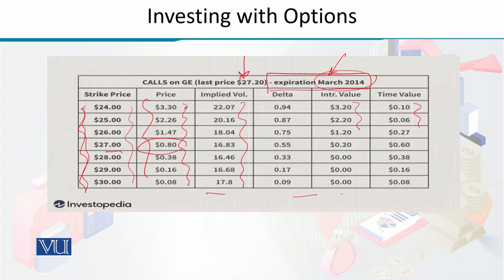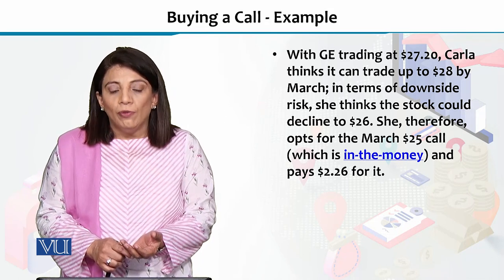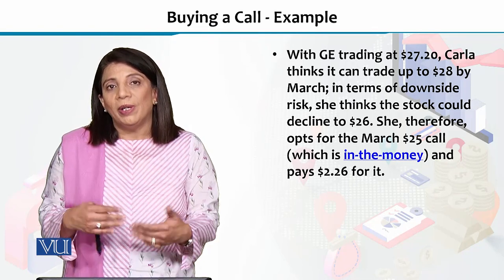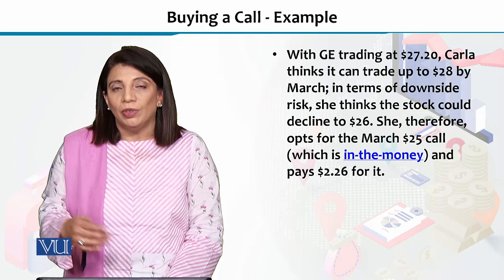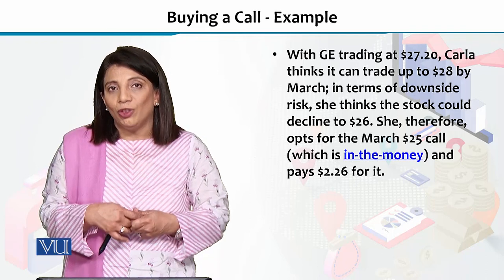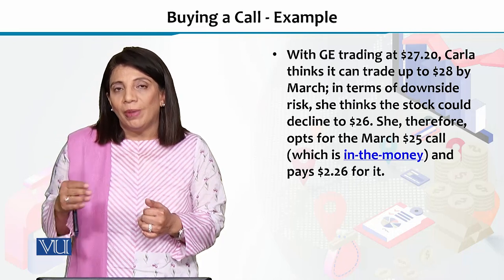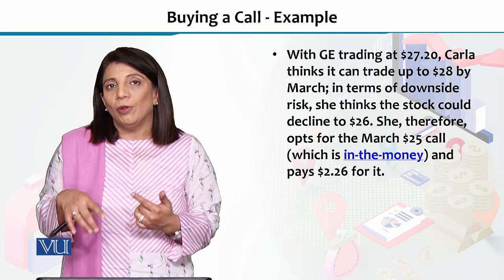ابھی جو changes آ رہے ہیں وہ delta کے column میں ہیں، intrinsic value دی ہے اور time value دی ہے۔ اس data کو مدِ نظر رکھتے ہوئے، یہ دو لوگ call option لینے میں interested ہیں کیونکہ وہ سمجھتے ہیں کہ GE کی کیمت مزید اوپر بڑھنے والی ہے۔ اگر آپ ابھی 27 ڈالر کی strike price پر GE کا stock purchase کر لیں اور March میں وہ 29 یا 37 ڈالر کا ہو جائے تو آپ کو per stock منافع ملے گا۔